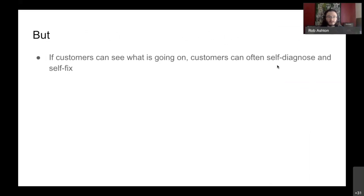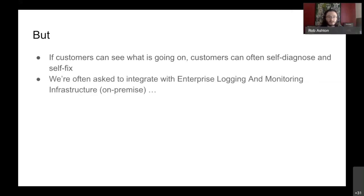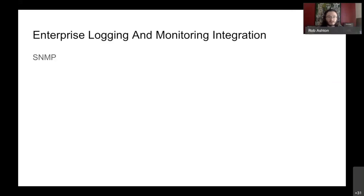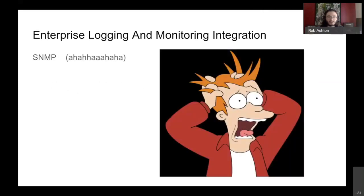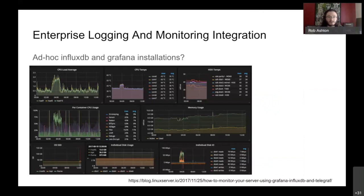Those are tools for us. But we found that if we give customers the ability to see what's going on, our customers can often self-diagnose issues and fix themselves - they're not stupid, they hire engineers. So we're often asked to integrate with their enterprise logging and monitoring infrastructure. One way we can do that is SNMP - not terribly pleasant. We can also do ad hoc InfluxDB, Grafana, and do pretty dashboards. In the past we've found that when we go to the effort of building these dashboards, they're used during sales meetings and never looked at again.